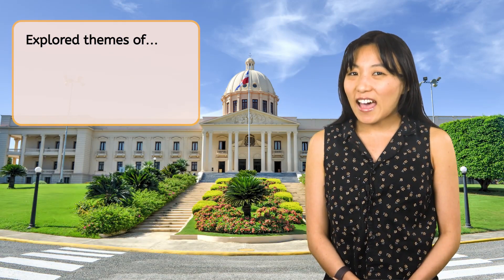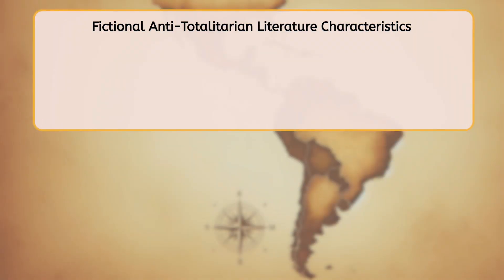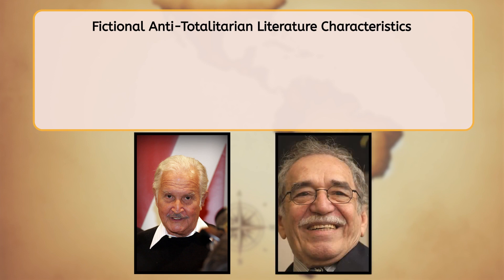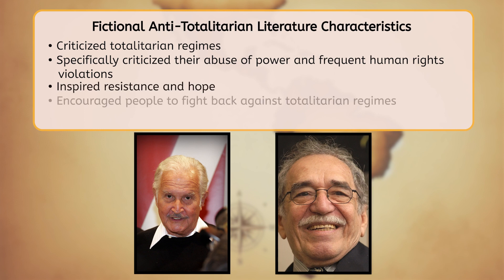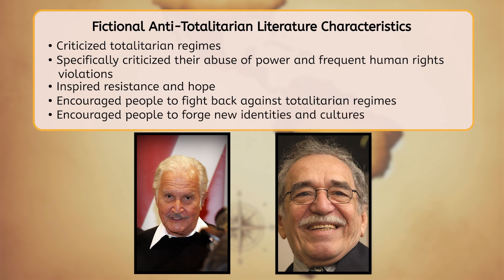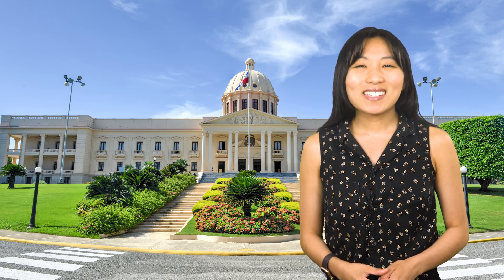You probably noticed that all three stories explore themes of greed, corruption, and abuse of power. Additionally, authors like Carlos Fuentes and Gabriel García Márquez criticized totalitarian regimes — in particular, they explored their abuse of power and frequent human rights violations. In addition, they also inspired resistance and hope, encouraging people to fight back against totalitarian regimes and forge their own identities and cultures in a new free world. During the mid-20th century, many Latin American countries fought back against and overthrew totalitarian regimes, installing more fair governments in their place. Today, Latin American literature both explores the continued impact of this time period and tackles other modern issues. Let's discuss our next steps, where you'll learn more about contemporary Latin American literature.